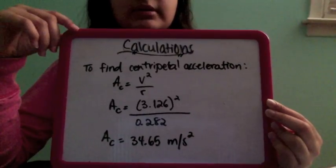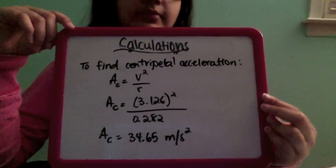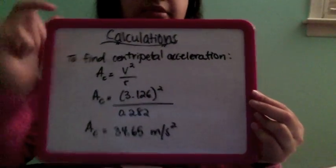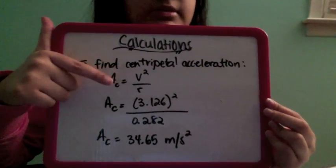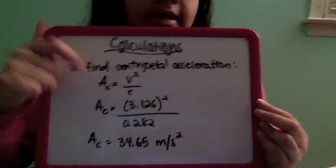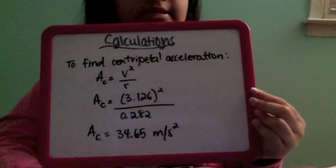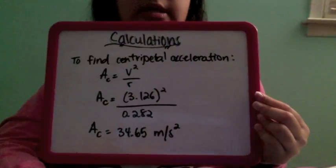To find centripetal acceleration, we used the formula velocity squared divided by radius. After we plugged in those numbers, we found that the centripetal acceleration equals 34.65 meters per second squared.